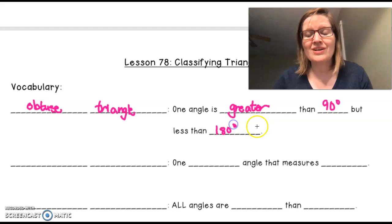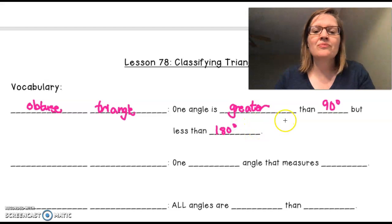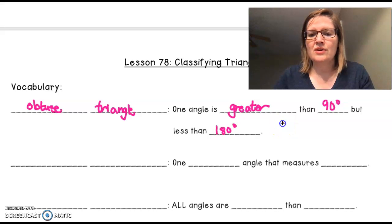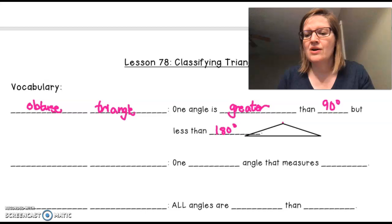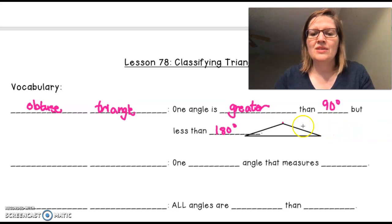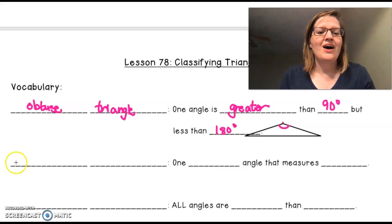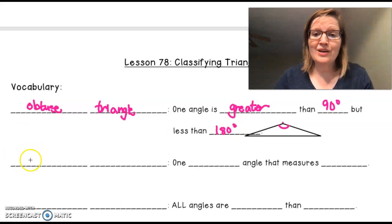Now a 180 degree angle is a straight line. So when we've got an obtuse angle, I'm going to create my obtuse angle. There's my obtuse angle. Notice that this angle right here is greater than 90 degrees. Our next triangle is pretty famous.